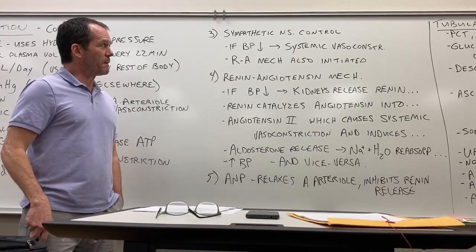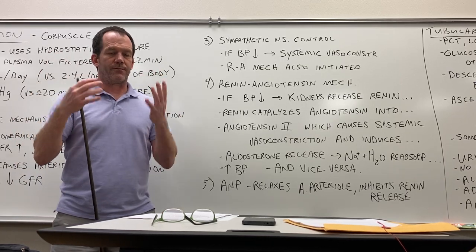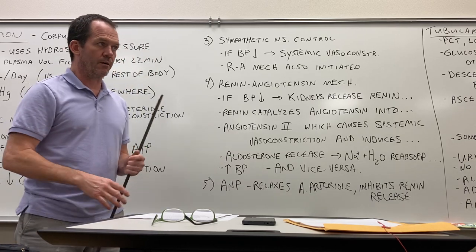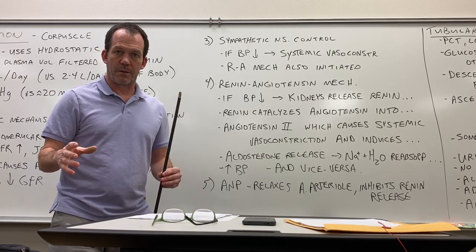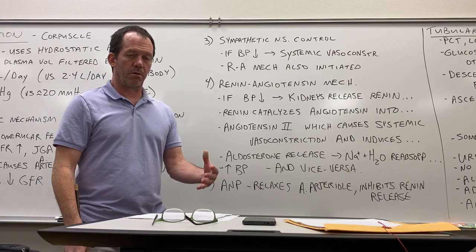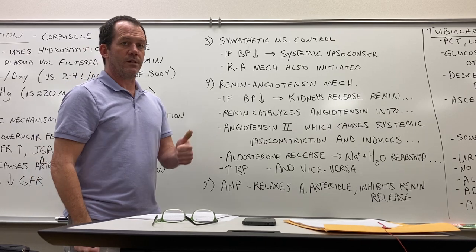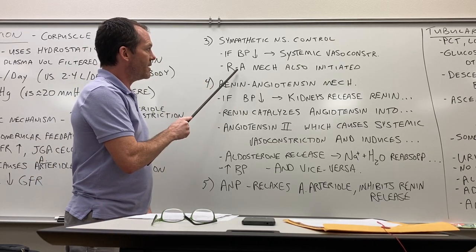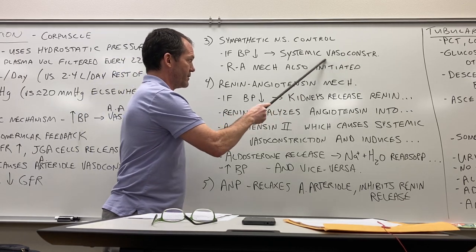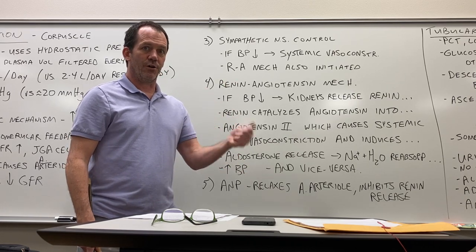The third mechanism is sympathetic nervous system control — the fight-or-flight response. If blood pressure is too low, the sympathetic nervous system causes systemic vasoconstriction to raise it. As a secondary effect, this activates the renin-angiotensin mechanism. During low blood pressure, you also want to conserve water by reducing urine production.